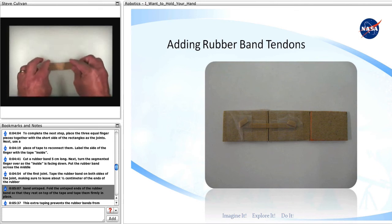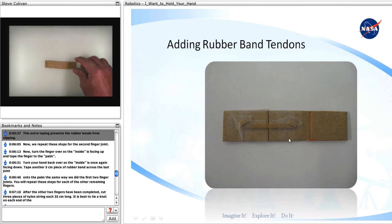Fold the untaped ends of the rubber band so that they rest on top of the tape and tape them firmly in place. This extra taping prevents the rubber bands from slipping.